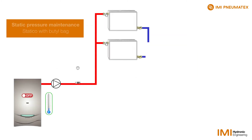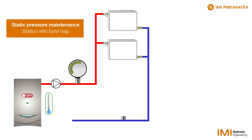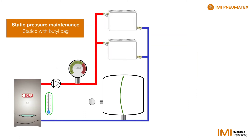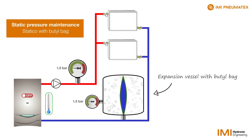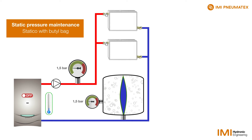Now we are looking at the same plant where a static pressurised system with a butyl bag is installed. The manometer displays a pressure of 1.5 bar when the system is in cold state.